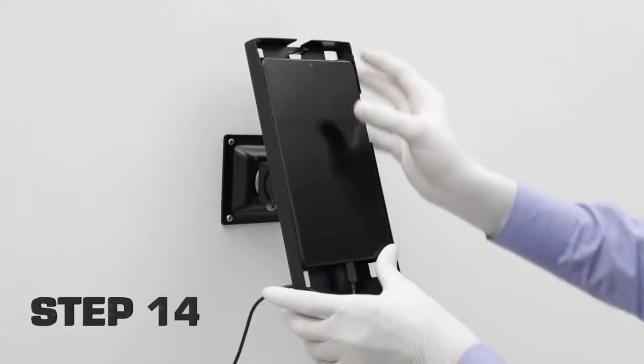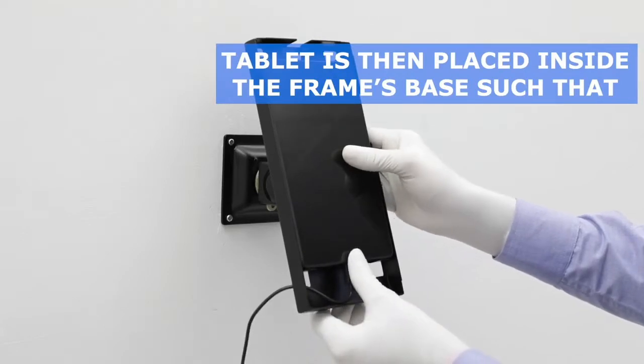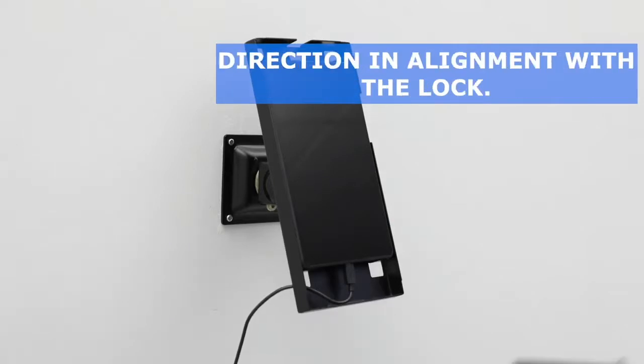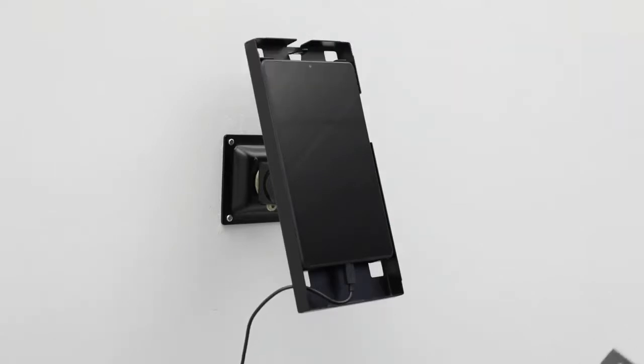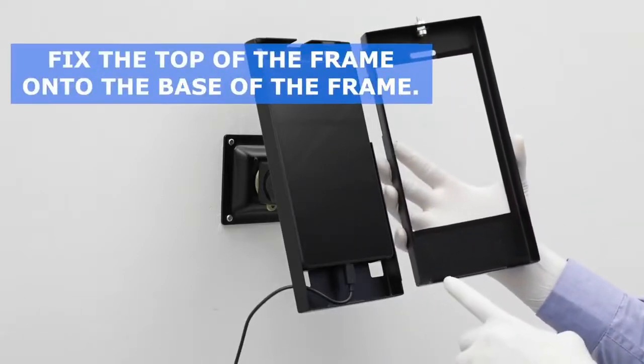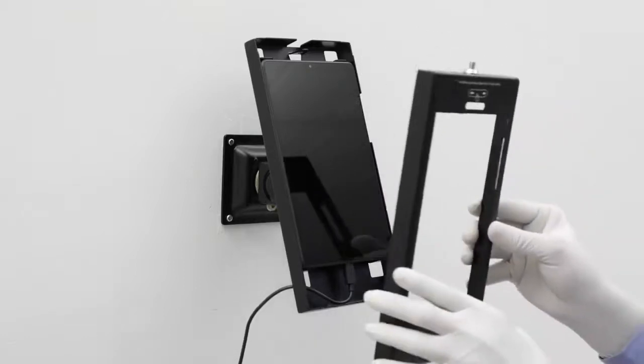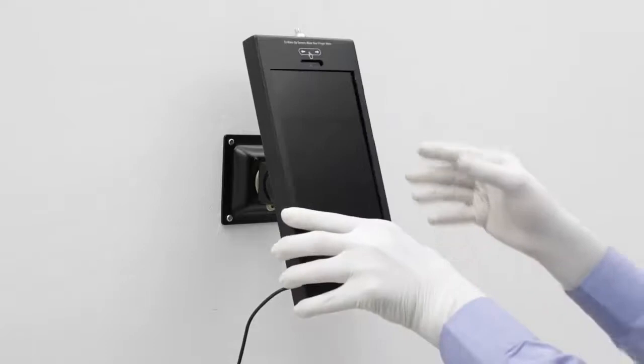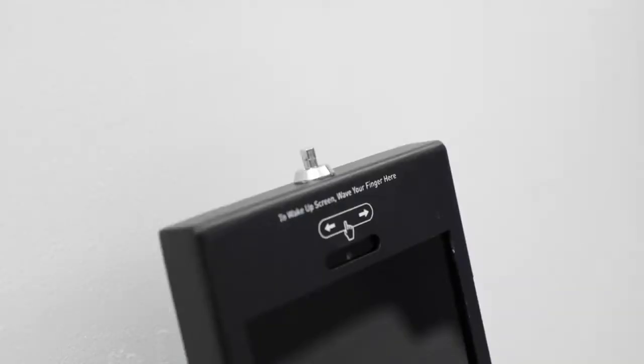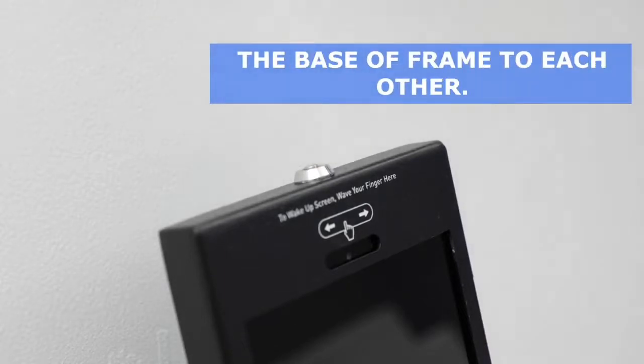Step 14: Tablet is then placed inside the frame's base such that the camera of the tablet is pointing towards the top direction in alignment with the lock. Step 15: Fix the top of the frame onto the base of the frame. The top of the frame has wings towards the bottom which goes into the slot present in the base of the frame. Step 16: Push the lock button down for locking the top and the base of the frame to each other.